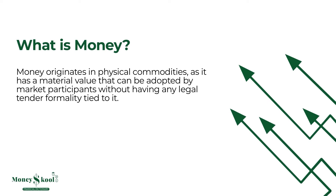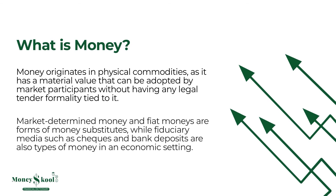Money originates in physical commodities, as it has a material value that can be adopted by market participants without having any legal tender formality tied to them. Market-determined money and fiat money are forms of money substitutes, while fiduciary media, such as checks and bank deposits, are also types of money in an economic setting.